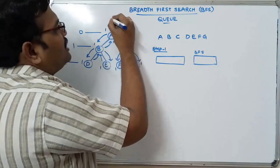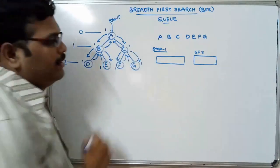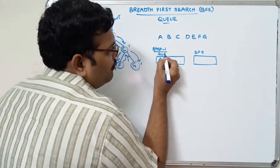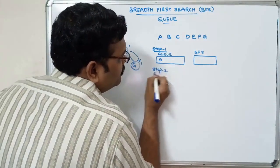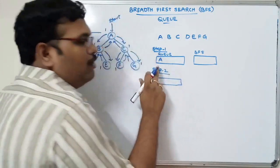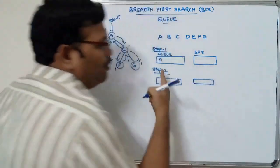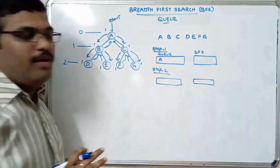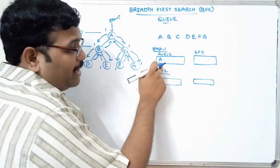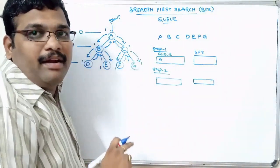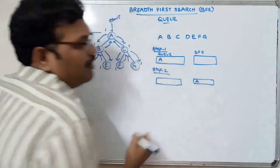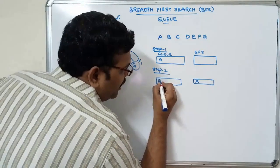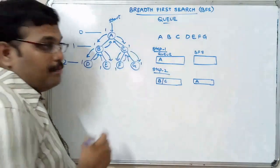Step one: start node is A. Insert A into the queue. Step two: remove the element from the queue and place it in BFS. As it is a queue, deletion will be from the front end and insertion will be from the back end. So A is removed and placed in BFS. Now insert all the adjacent nodes of A into the queue. The adjacent nodes are B and C.